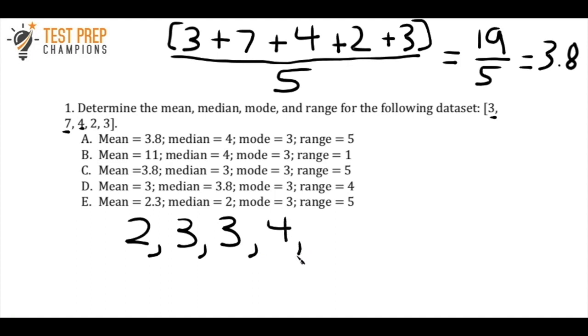So just remember that if you ever get the median, put the numbers in order from smallest to largest, and then find the middle number. So here the middle number is 3.